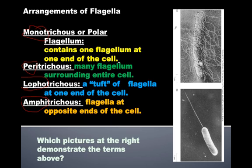Looking at the pictures, what would you call picture A? Hopefully you recognize that one is peritrichus. The Bacillus with a single flagellum — that one is monotrichus or polar flagellum.